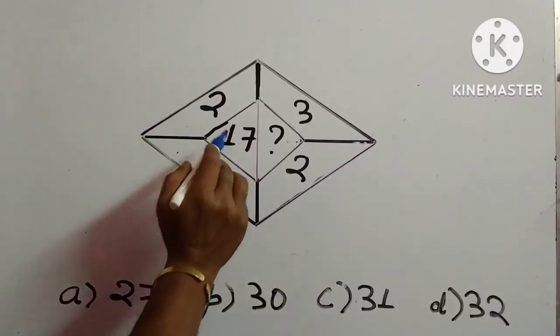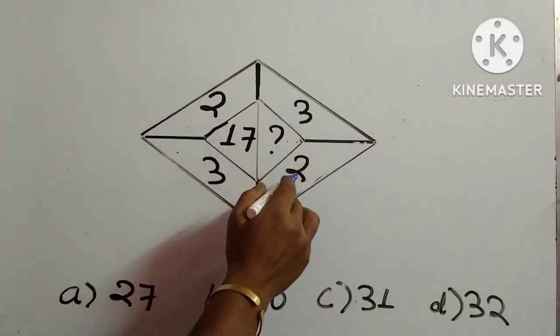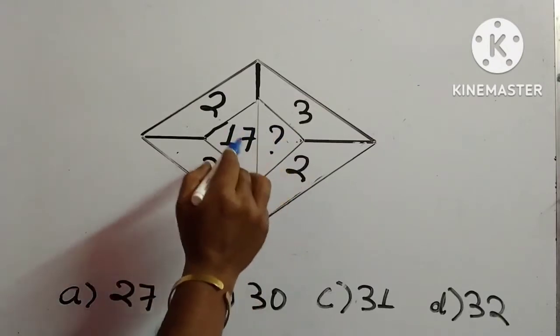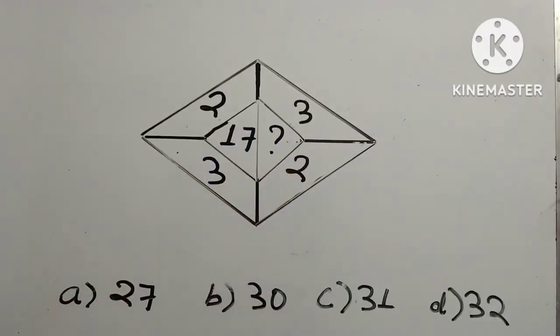In this question, 2, 3, 17 is given and 3, 2 is written. We need to find out this appropriate number over here and the four options are given. So before I solve, do like, share, comment and subscribe to